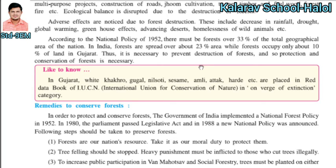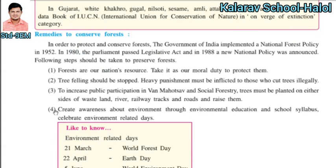In Gujarat, wild plants like indha, khakro, google, nishoti, and others are placed in the Red Data Book of IUCN. The full form of IUCN is International Union for Conservation of Nature. These plants are in the category of on the verge of existence.